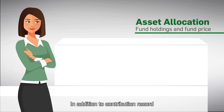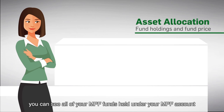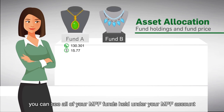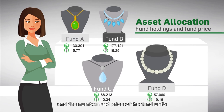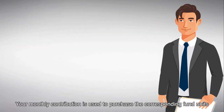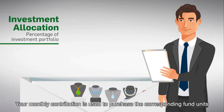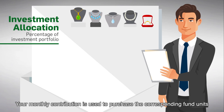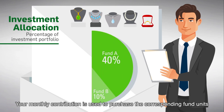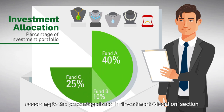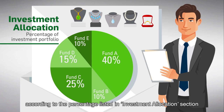In addition to contribution records, you can see all of your MPF funds held under your MPF account and the number and price of the fund units at the time of calculation in the Asset Allocation section. Your monthly contribution is used to purchase the corresponding fund units according to the percentage listed in the Investment Allocation section.